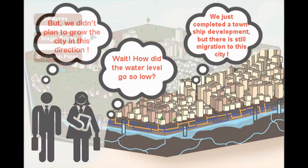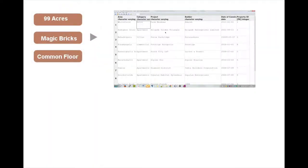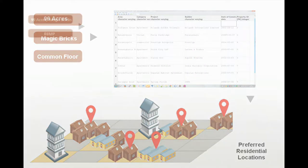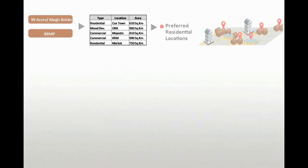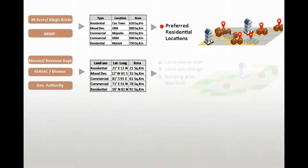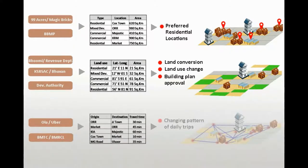An urban observatory tries to answer such complex questions by connecting multiple large datasets over a geospatial platform. It churns out analysis continuously at different scales. For example, dynamic data from property finder sites and cab aggregator platforms when mapped with land conversion, building permission and industrial location databases can generate very useful geospatial analysis.